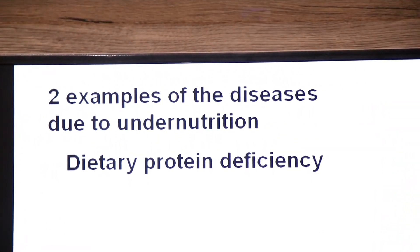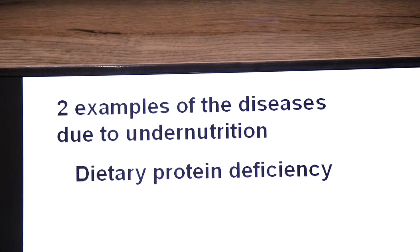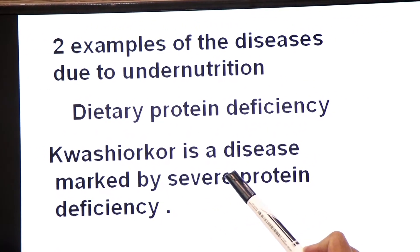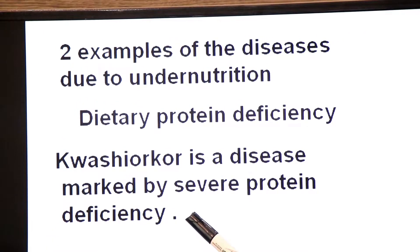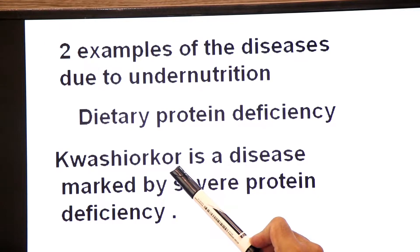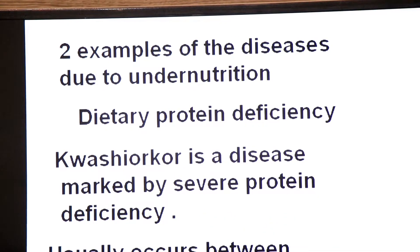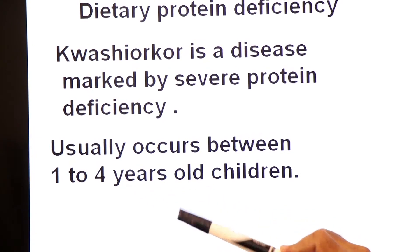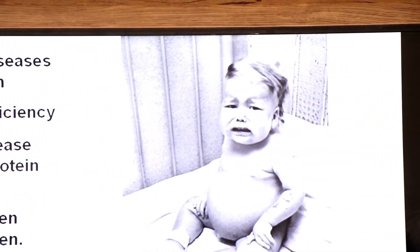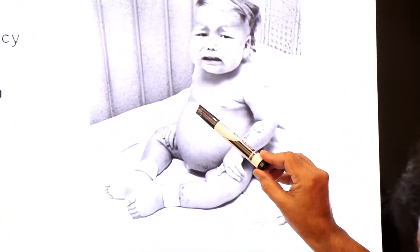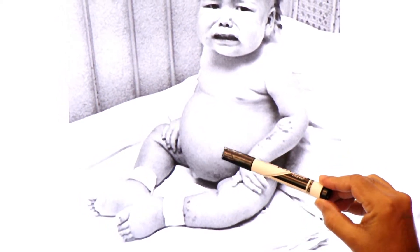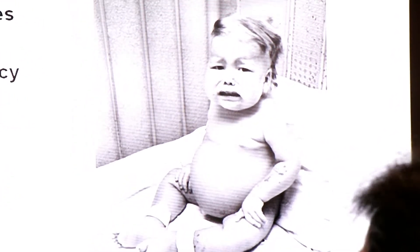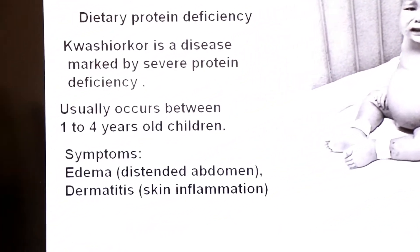The first example is dietary protein deficiency. If there is a deficiency of protein in the diet, which disease results? Kwashiorkor — a disease marked by severe protein deficiency. This disease usually occurs in children between one to four years old. Look at this baby who has Kwashiorkor disease. The symptoms you can see are: distended abdomen, which is called edema, and inflammation of the skin, which is called dermatitis.